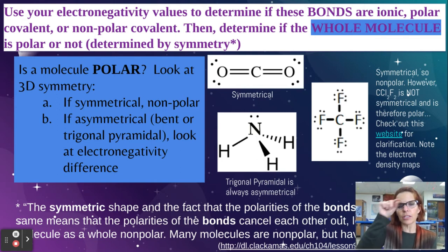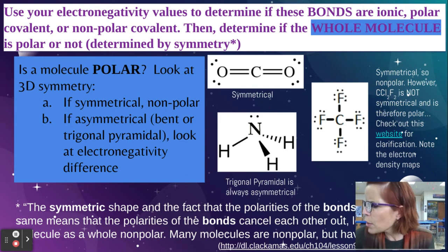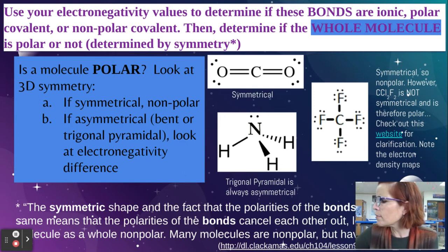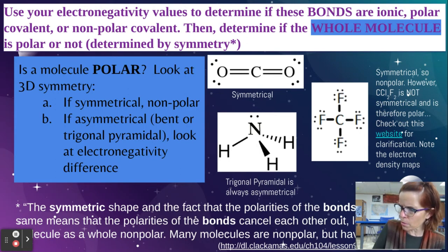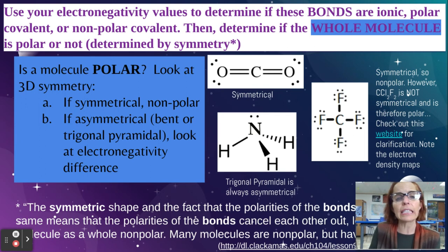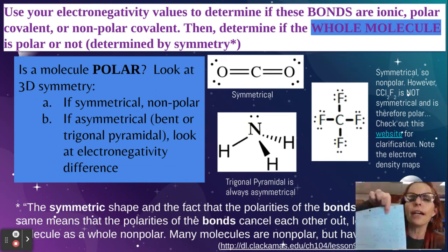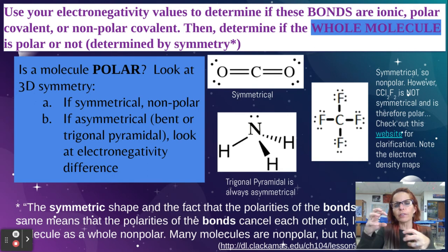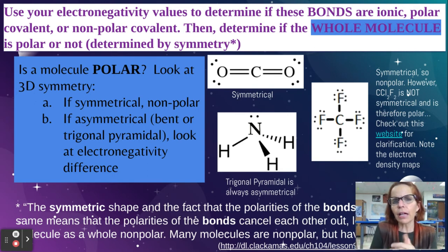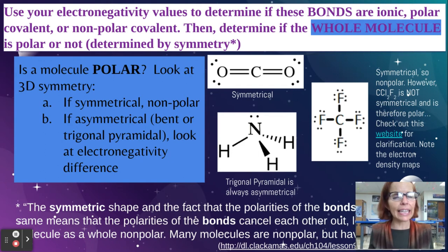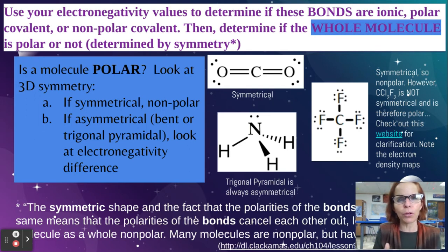Next to the carbon with the four fluorines — carbon tetrafluoride — it says it is symmetrical. So all the carbons are pulling against the fluorines and it's symmetrical, even though carbon and fluorine have a difference: 2.5 and 4.1. So 4.1 minus 2.5 — they have an electronegativity difference of 1.6, way up at the top of polar. But in this case, all of the fluorines are pulling equally because the molecule is symmetrical, and so that actually cancels out the polarity and makes it a nonpolar molecule.